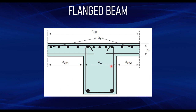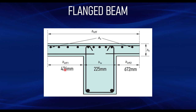Therefore, BEFF equals BW + BFF1 + BFF2 = 225 + 436 + 672 = 1333 mm. The final section shows BW of 225 mm, BFF1 of 436 mm, and BFF2 of 672 mm, giving a total effective flange width of 1333 mm. This is how you estimate the effective width of your flange whether you are considering a continuous slab, a rib slab, or a waffle slab. I hope you've learned one or two things in this video — don't forget to subscribe, like, and share. Thank you, see you next time.